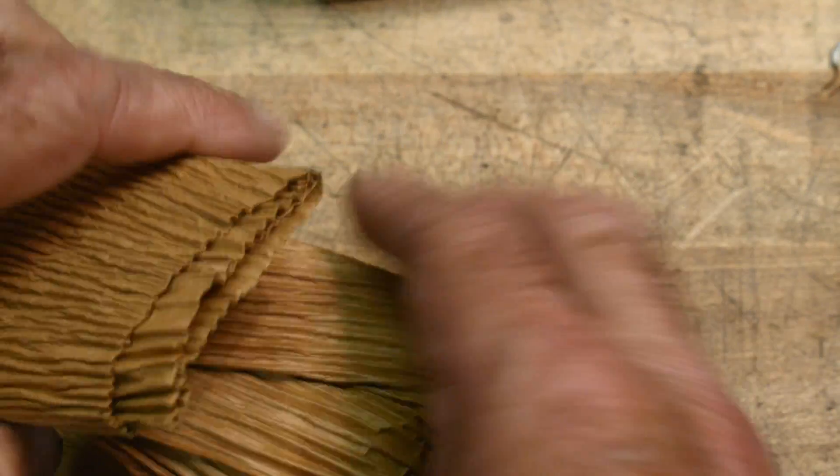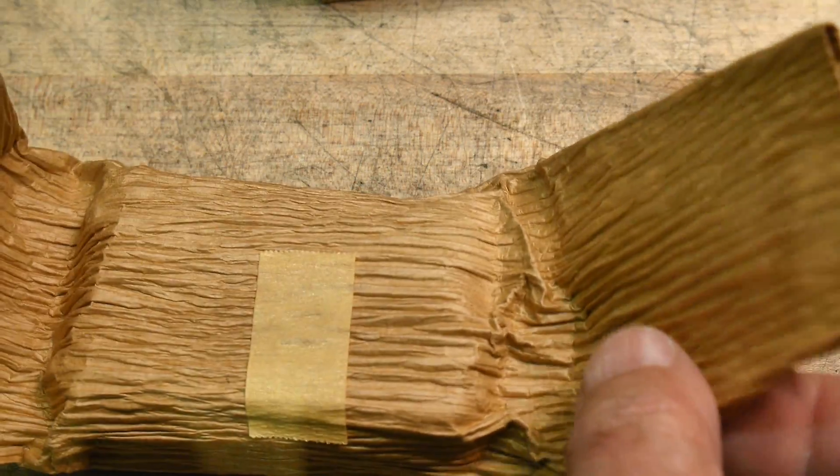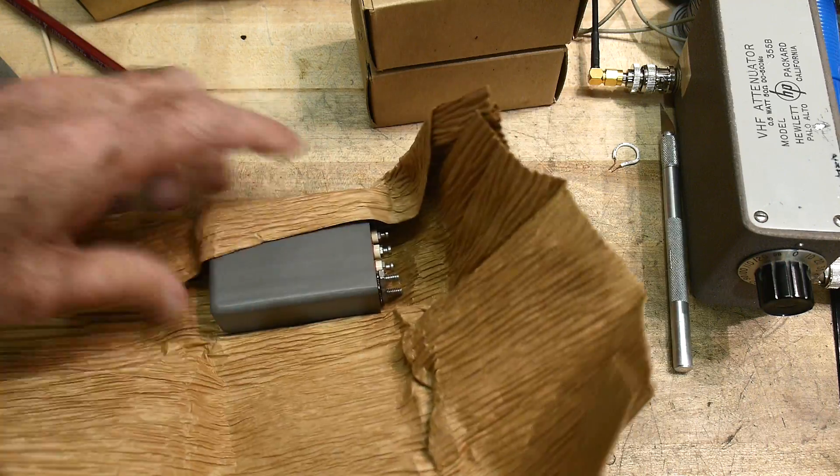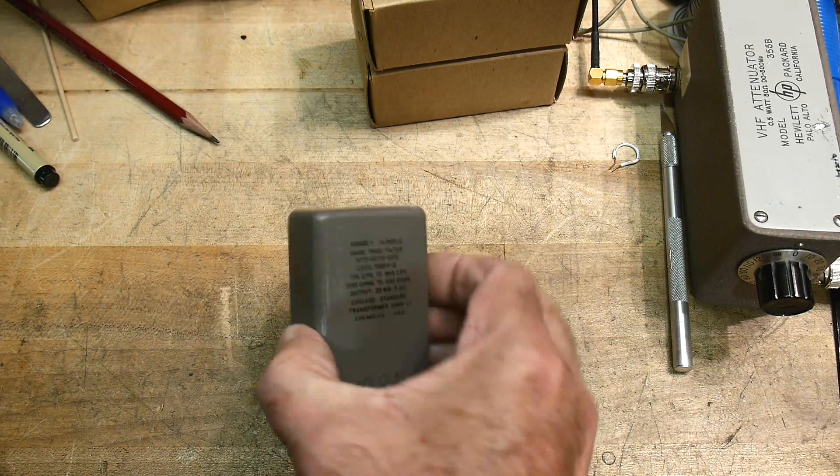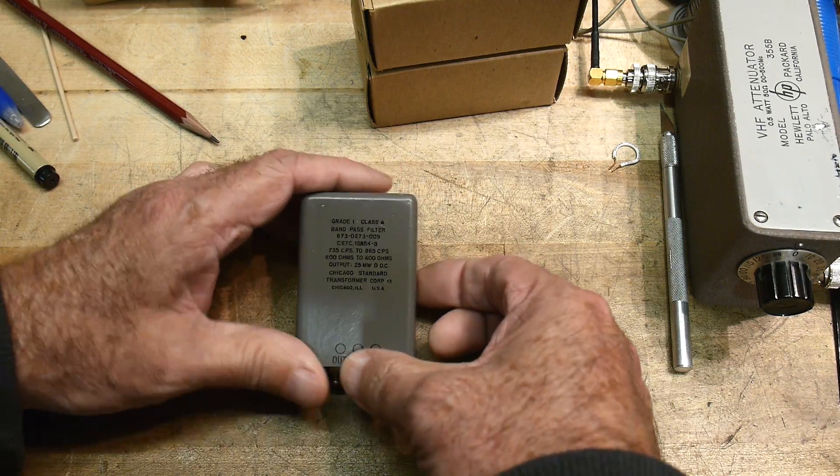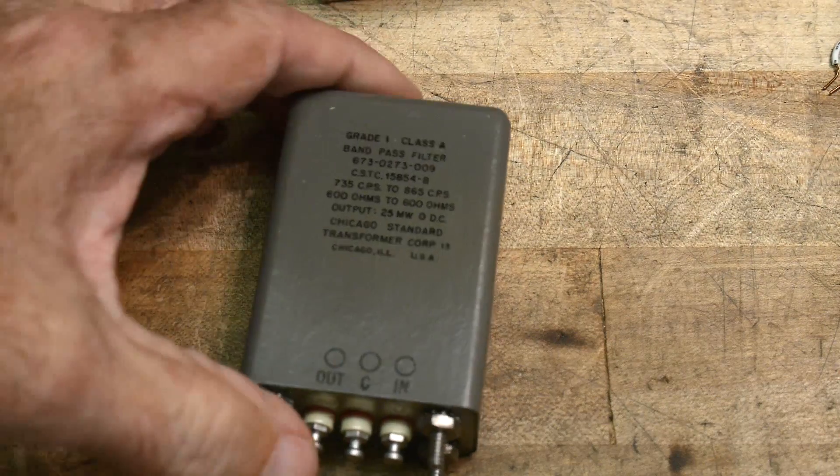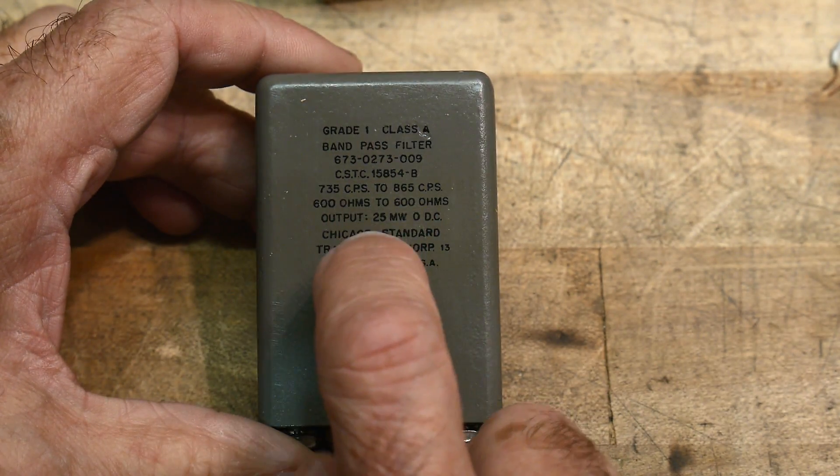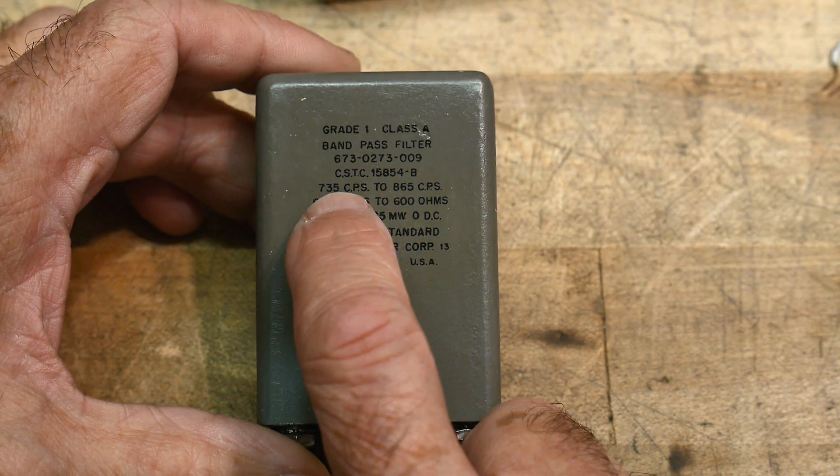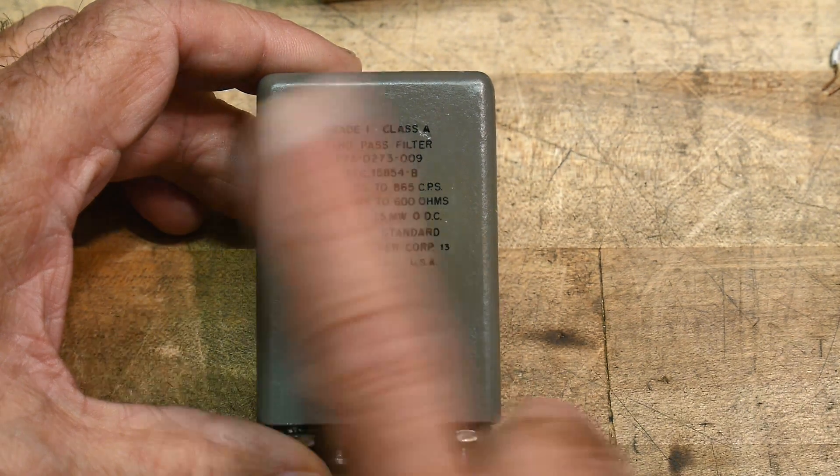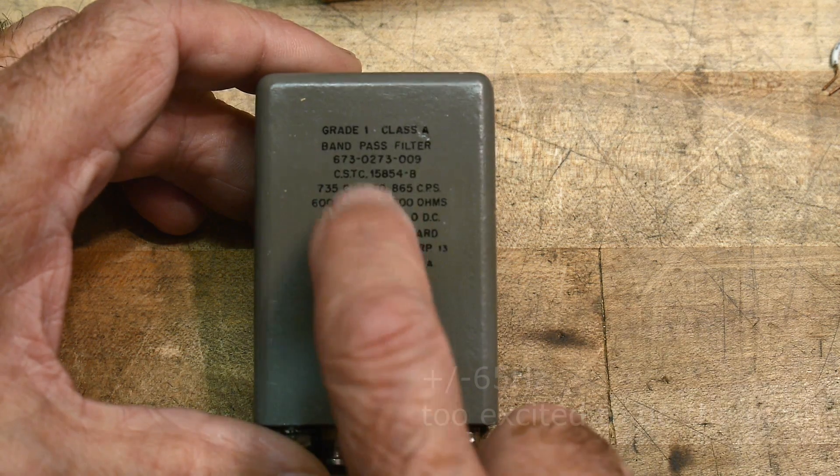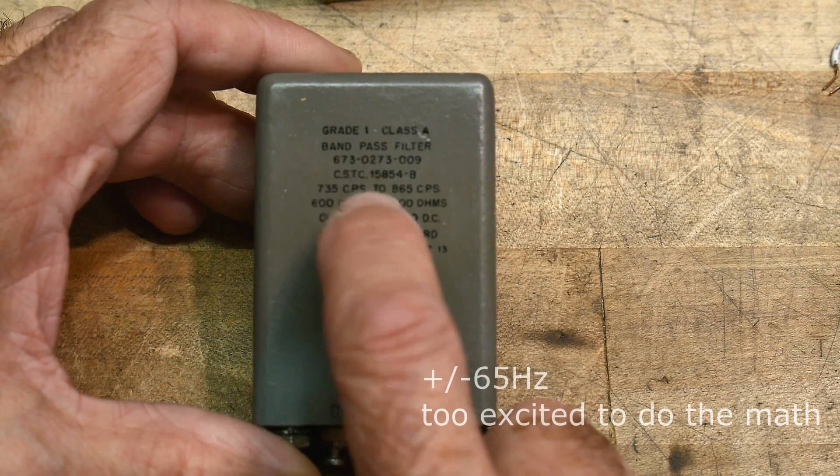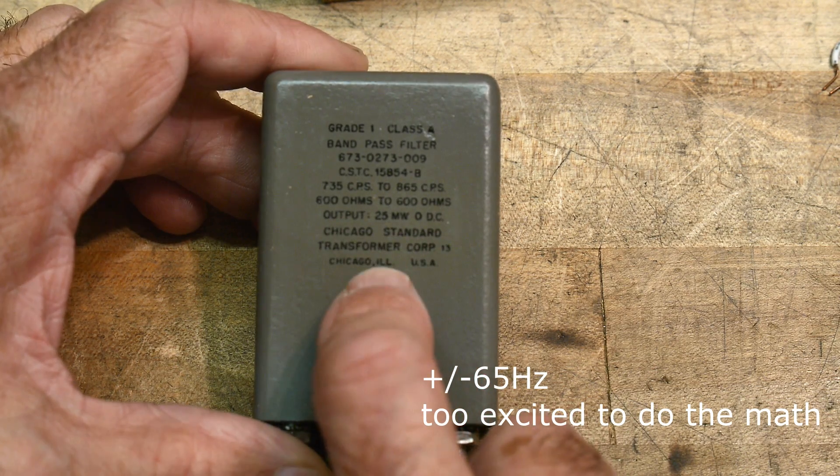If you don't know what a mechanical filter is, well, maybe we'll show you. Let me zoom out a bit here. Okay, now we're taking it apart. I think this was the one that was opened up so they could photograph it. So let's see here. Let's zoom back down again. Can you read that? Grade one, class A band pass filter, 735 to 865 cycles per second, before hertz. So it's an 800 hertz filter, plus and minus 35 hertz. That is so cool.